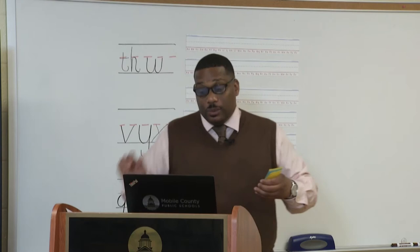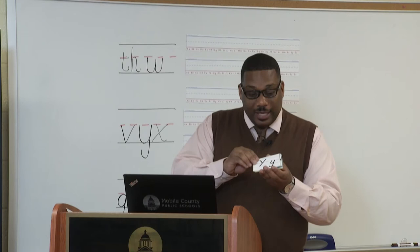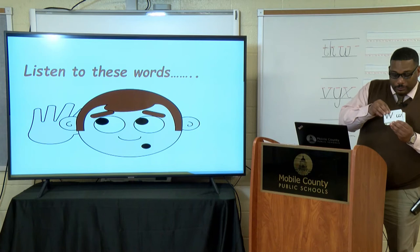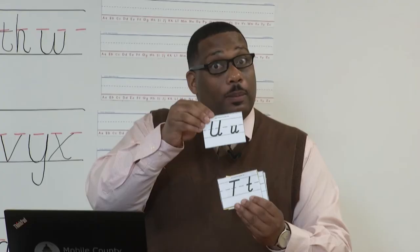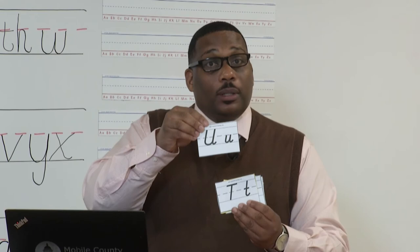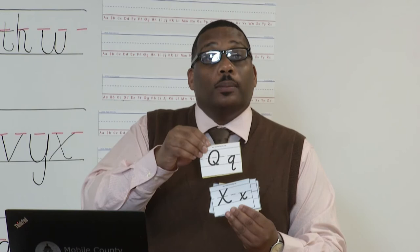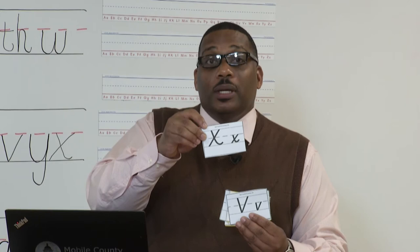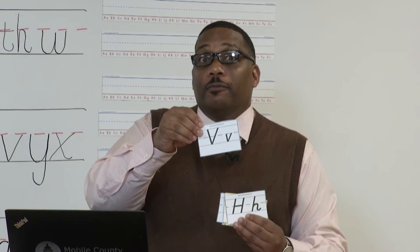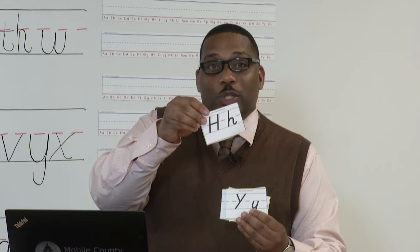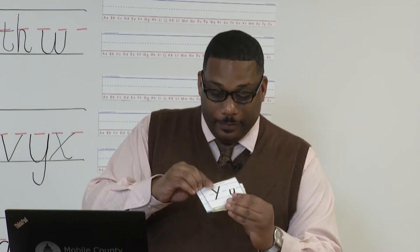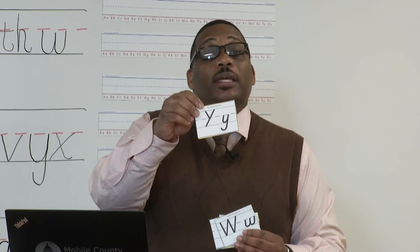Kindergarteners, let's see if we can say those sounds that each letter makes. I'm going to hold up these cards and you give me the sound. Yuh. What about this one? W. What about this one? Uh — as if someone has hit you in your stomach. What about this one? T. This one? Qu. Here's our special sassy sound: Ks. That's X. What about this sound? V, as in vest — Mr. Jackson has on a vest. What about this one? H, as in hand or heart. And our last sound? Yuh, as in yard or yes.